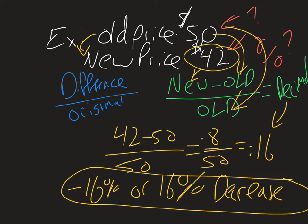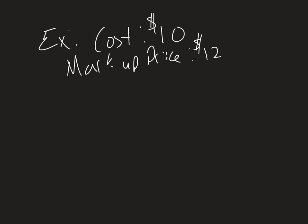Now, this also works if there's an increase in price, which will be our next example. So let's look at one where I buy something for $10 and then I have to turn around and I have to sell it for a profit. So I have to do what's called a markup.